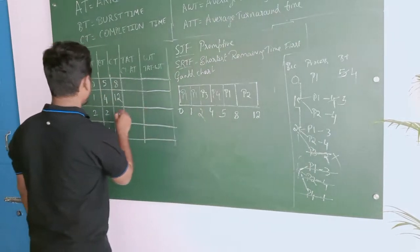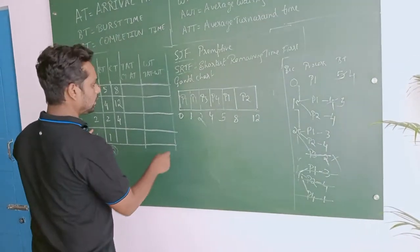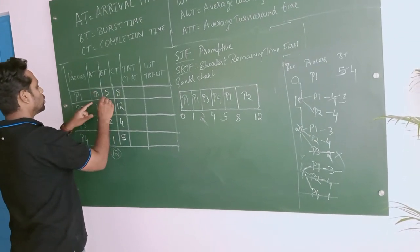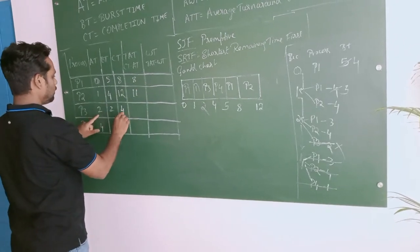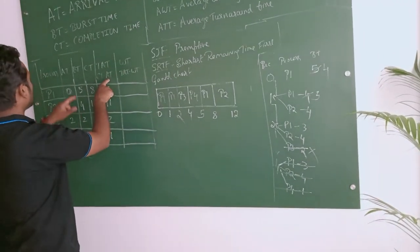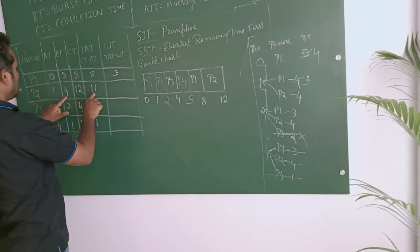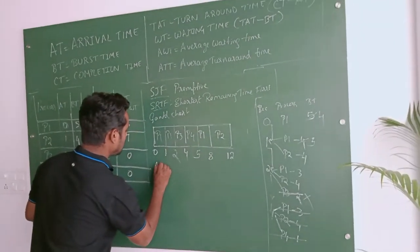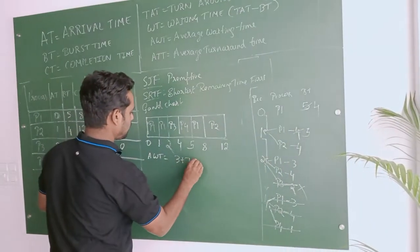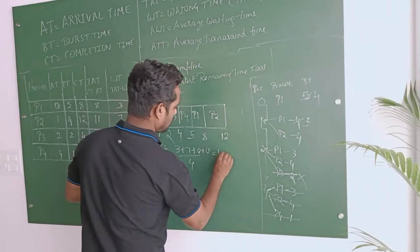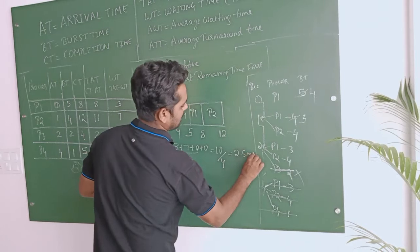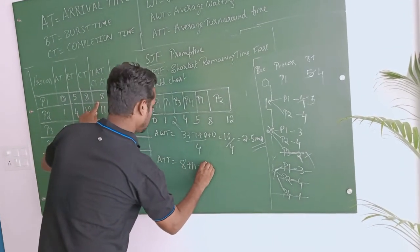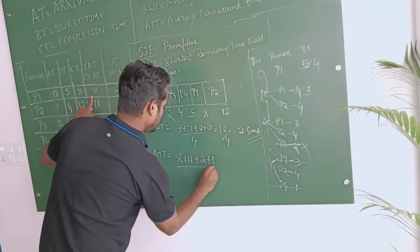Completion times: P1 = 8, P2 = 12, P3 = 4, P4 = 5. Turnaround time = completion time minus arrival time: P1 = 8 - 0 = 8, P2 = 12 - 1 = 11, P3 = 4 - 2 = 2, P4 = 5 - 4 = 1. Waiting time = turnaround time minus burst time: P1 = 8 - 5 = 3, P2 = 11 - 4 = 7, P3 = 2 - 2 = 0, P4 = 1 - 1 = 0.